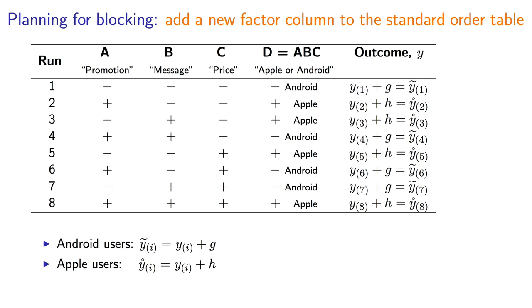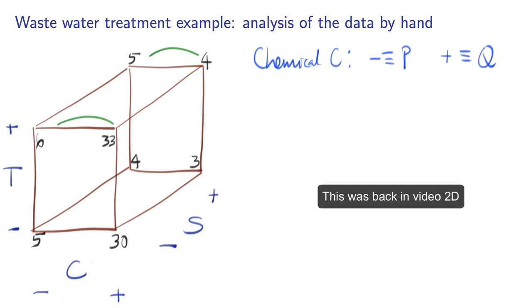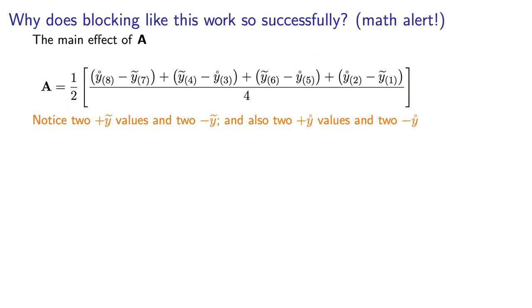Remember how we calculated the main effects? High minus low, high minus low, high minus low, and high minus low. And then we averaged the answer. Well for the main effect of A, we notice that there's an equal number of additions with a tilde, as they are subtractions.